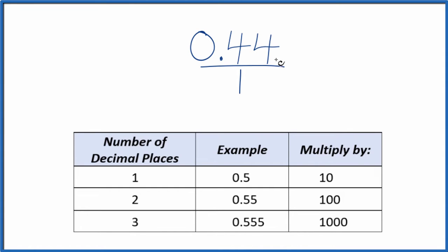Next we need to get this 0.44 to a whole number, and I see we have two decimal places. So we have two decimal places, we can multiply by 100. So 100 times 0.44, that ends up giving us 44, and that's a whole number.